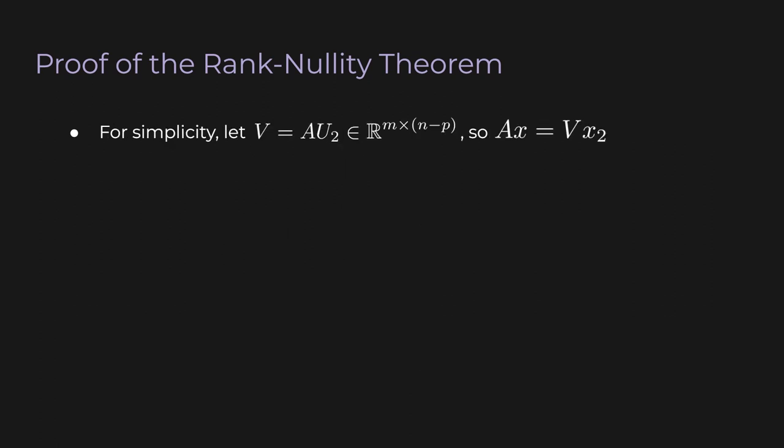Now let's return our attention to U2. For simplicity, let V equal AU2. It's just a new name. And note that V is a matrix with shape M by N minus P. Just recapping here, we have AX equals VX2. Think about this carefully. This simple equation means that the columns of V span the range of A. Any vector in the range of A can be expressed as AX. But for any X, there must exist some X2 such that AX equals VX2. Whatever vector we can produce with A, we can also produce with V.